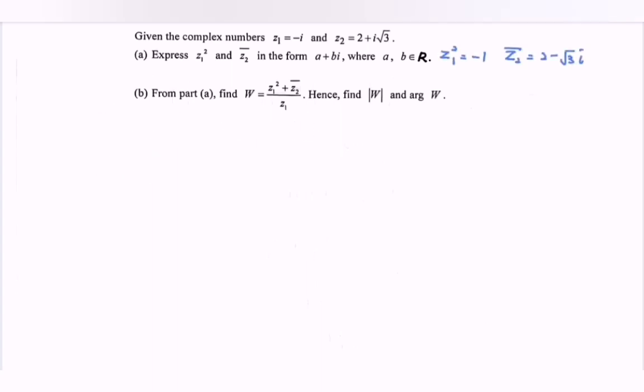Part b: From part a, find w. So first, we have to substitute w, where we have z₁ squared, which is negative 1.